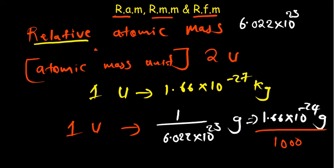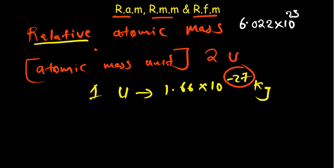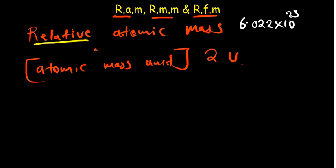If you subtract 3 from the power, it becomes negative 27, which matches our value in kilograms. You can either remember 1 over Avogadro's constant equals 1 atomic mass unit in grams, or just memorize the constant — but usually in your assessments it will be given, so no need to worry too much about it.